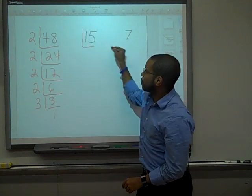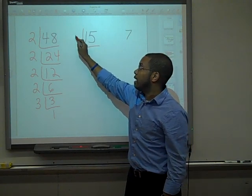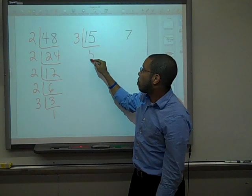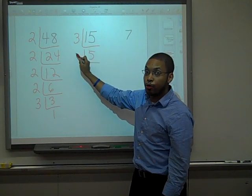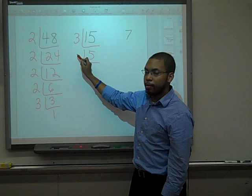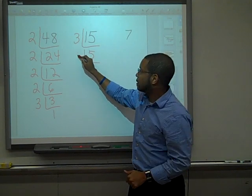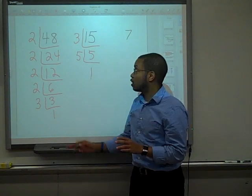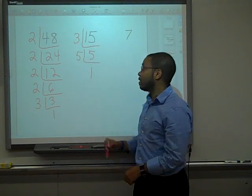For 15: can 2 go into 15? No. Can 3 go into 15? Yes — 5 times. Can 2 go into 5? No. Can 3 go into 5? No. Can 5 go into 5? Yes — 1 time. We're done. The prime factorization of 15 is 3 times 5.